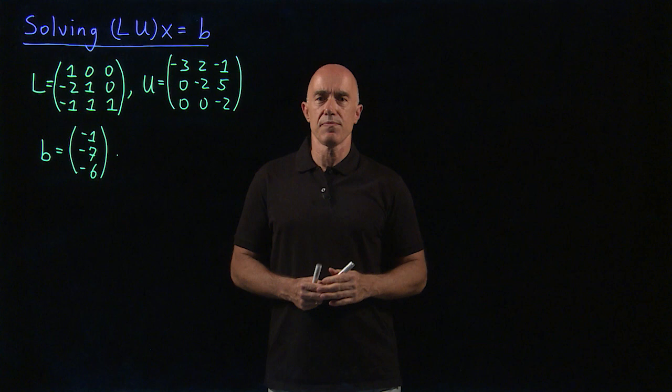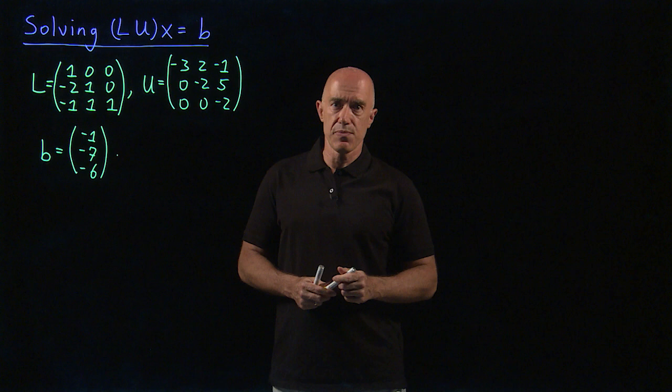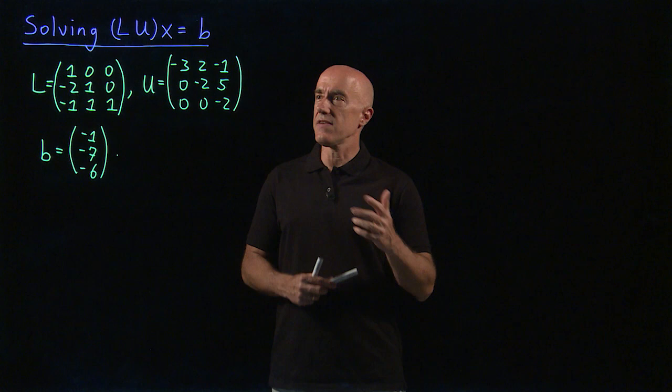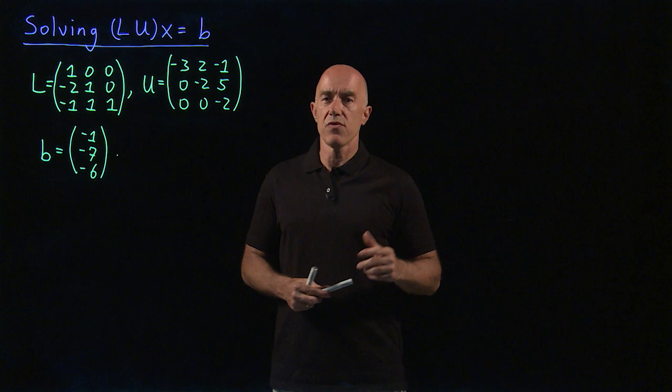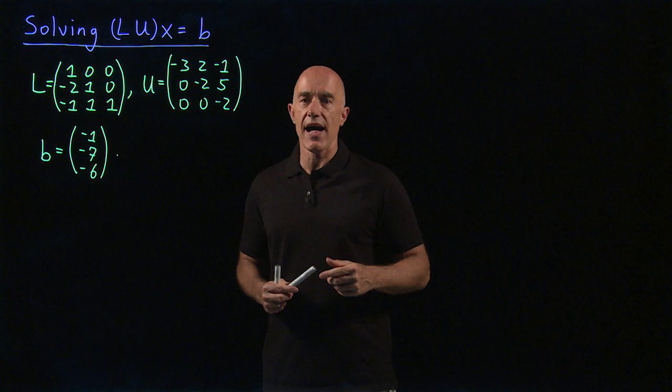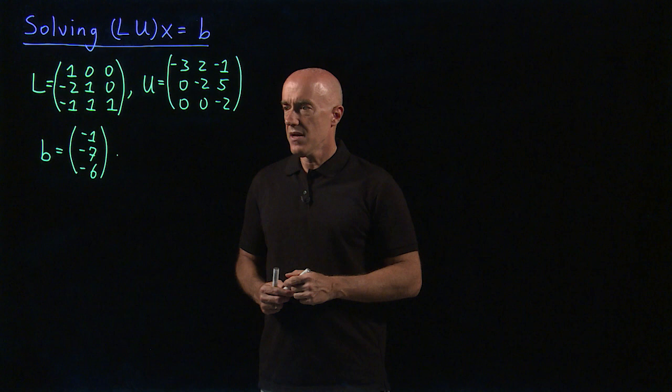So you use the LU decomposition and you solve LUx equals B if you need to do it multiple times. That would only be beneficial if it's faster computationally to solve LUx equals B than AX equals B. And to give you an idea, if there's like 10,000 different right-hand sides, it will be about 10,000 times faster to solve LUx equals B than to solve AX equals B. So computationally, this is a very valuable decomposition of the matrix.